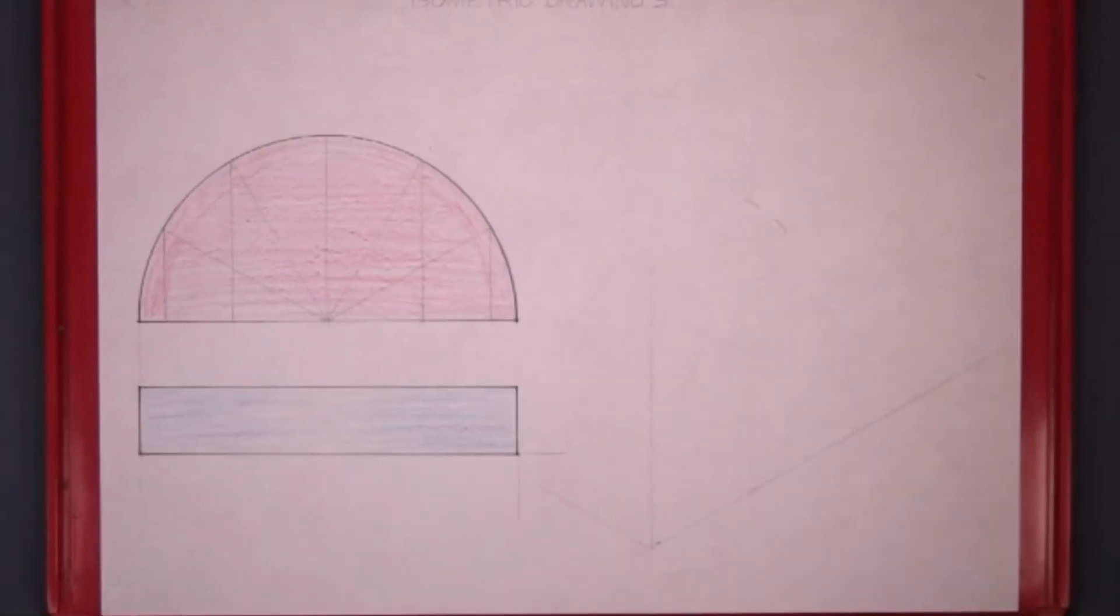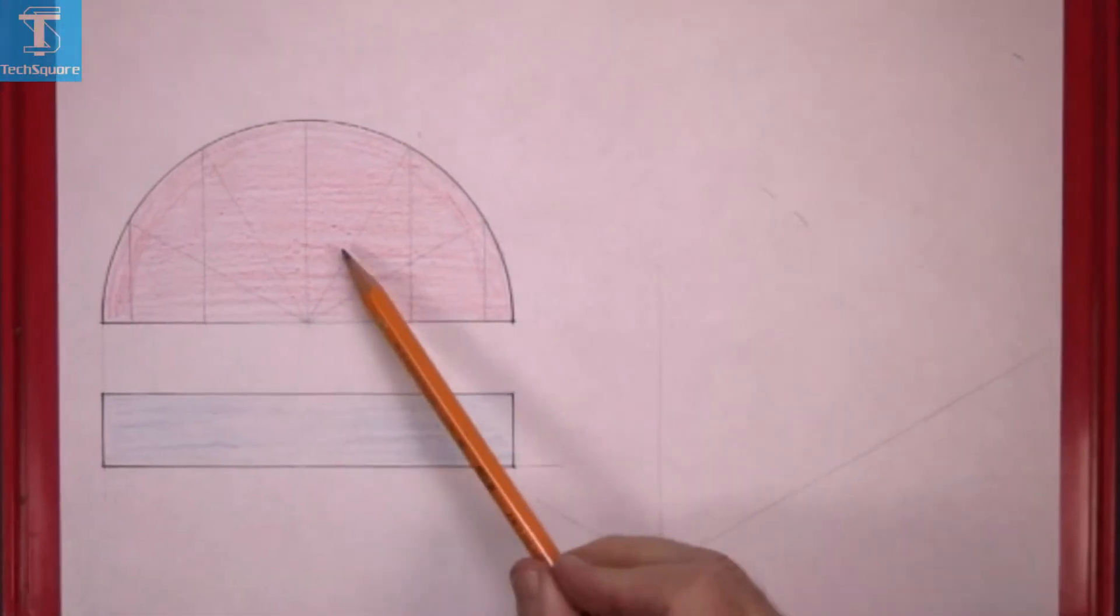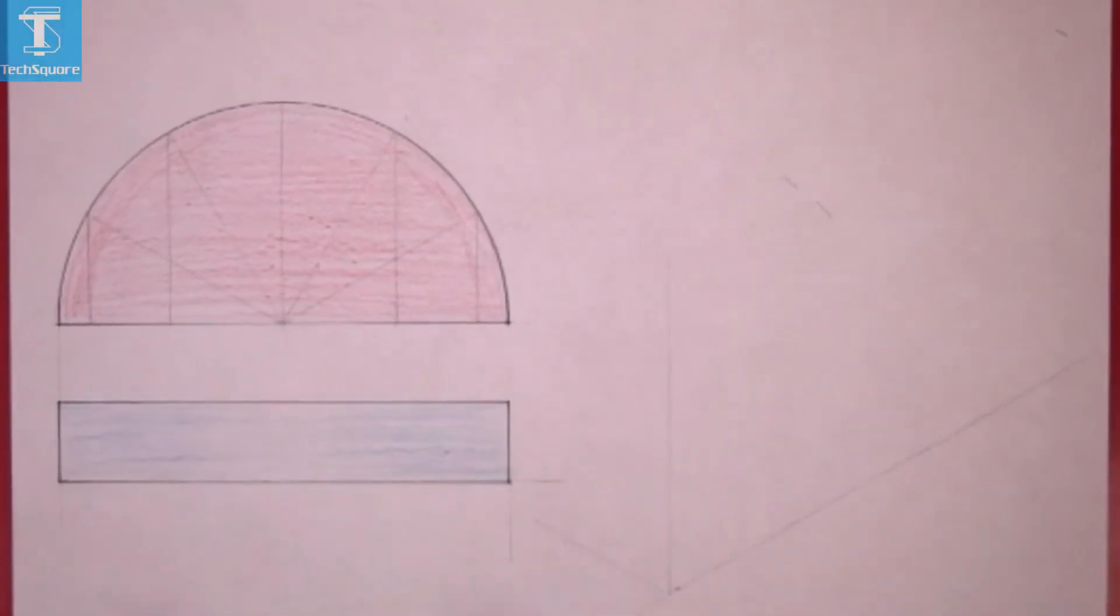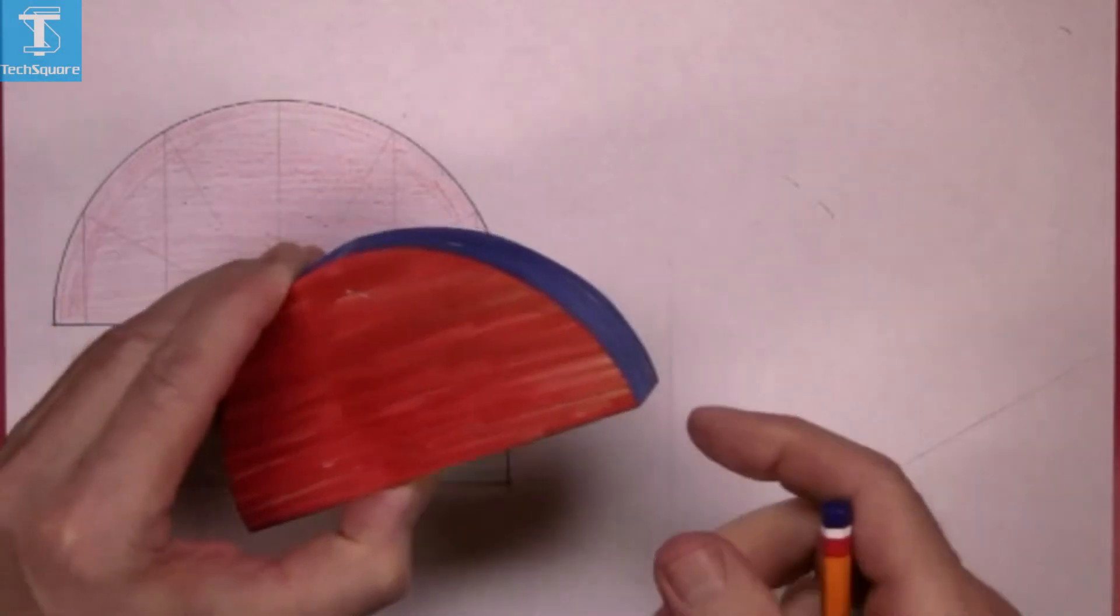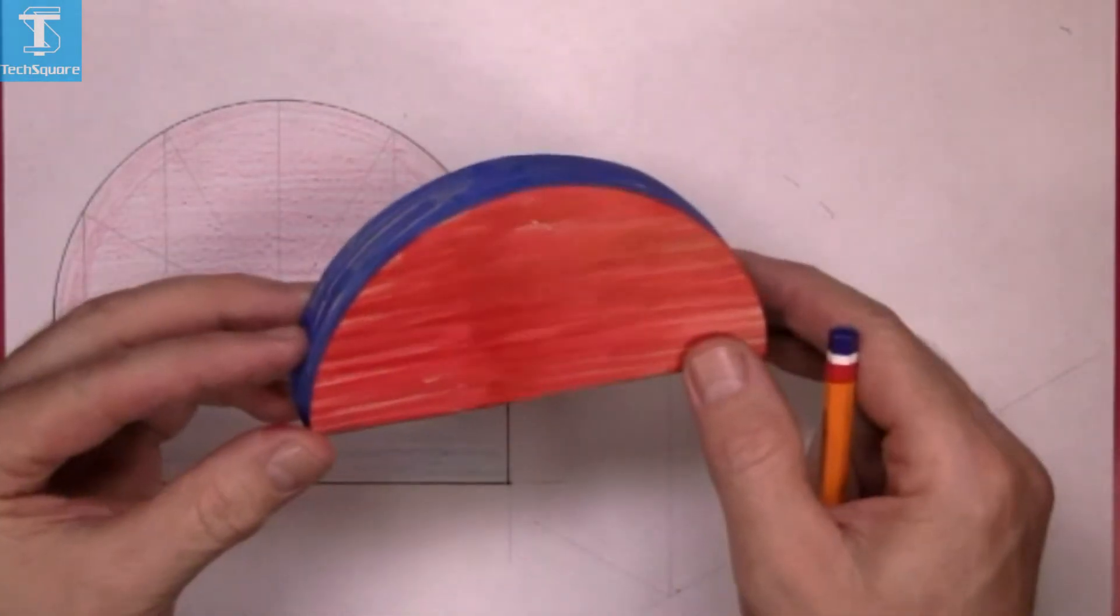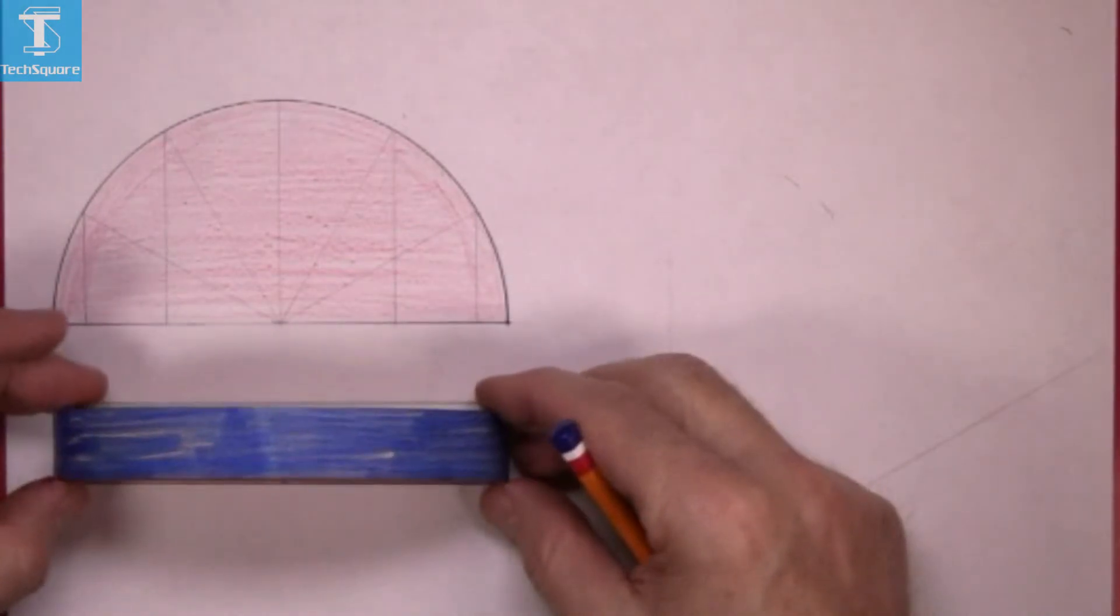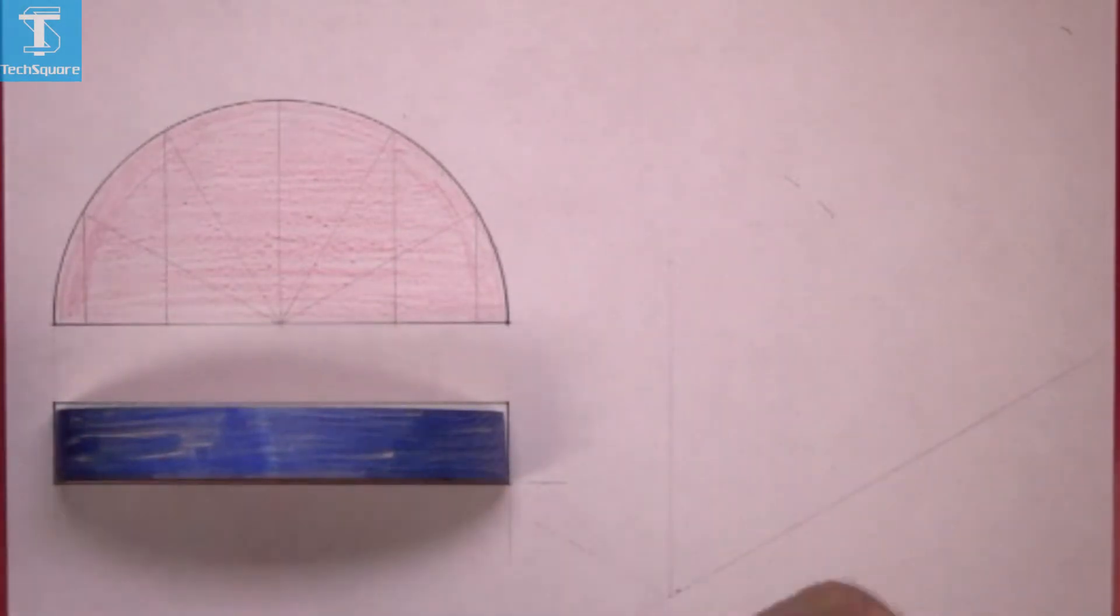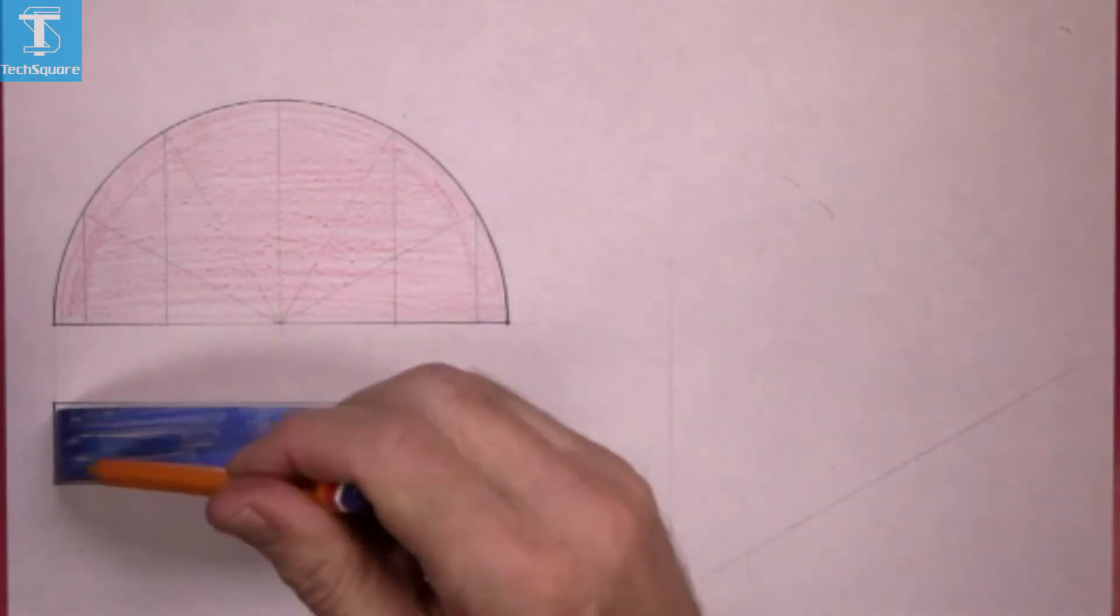Isometric Drawing 5. Given the elevation and plan of this block of timber that's cut in the shape of a semicircle, the plan is looking directly down on it and it's in the shape of a rectangle.